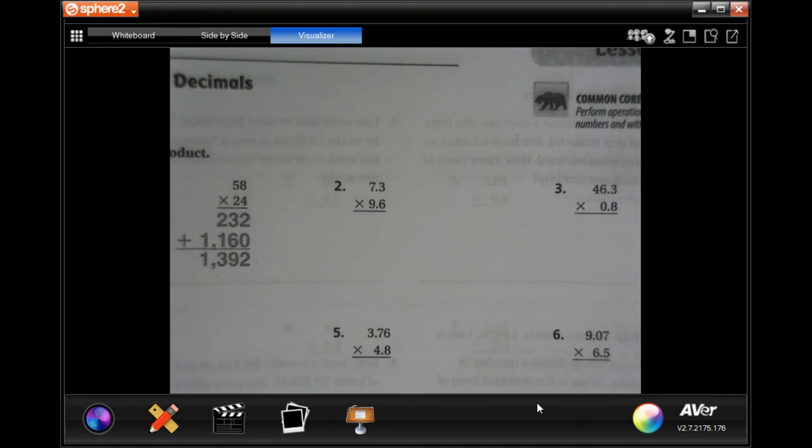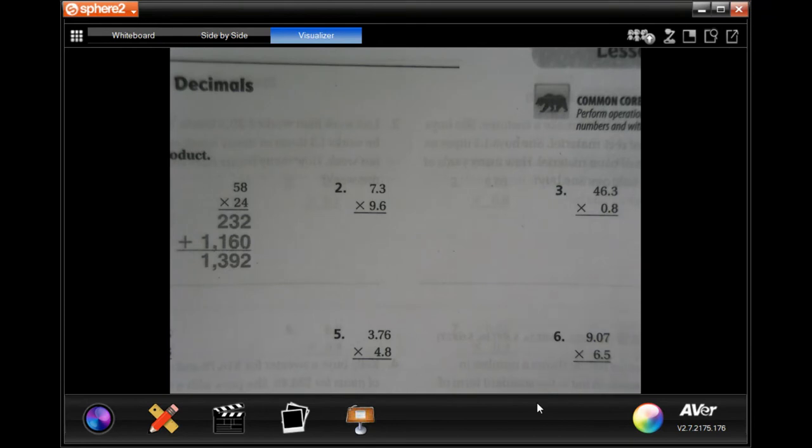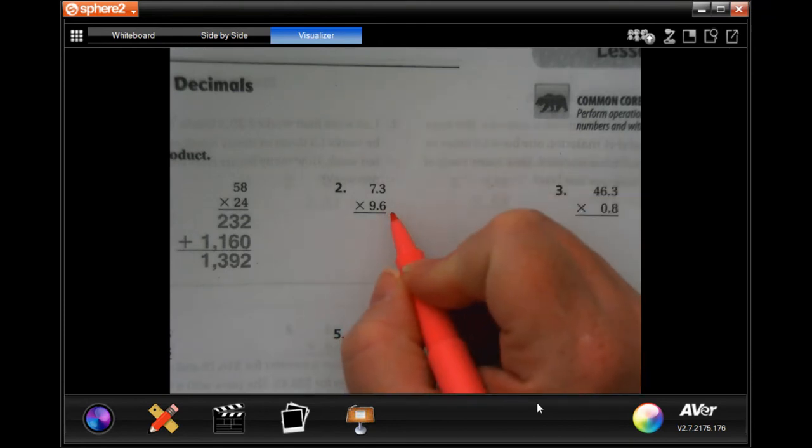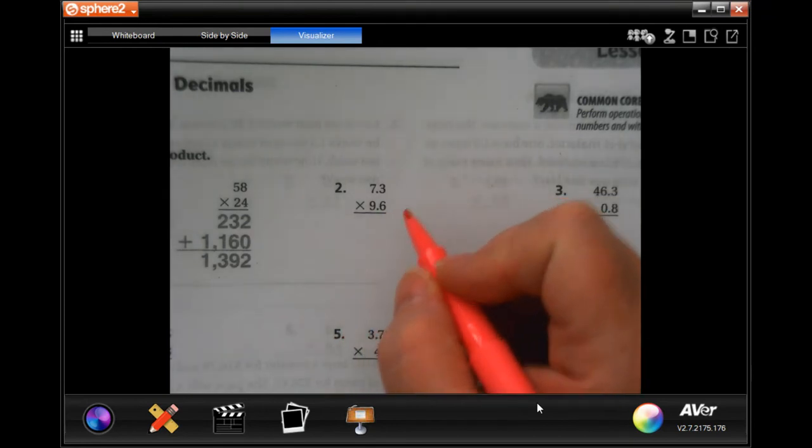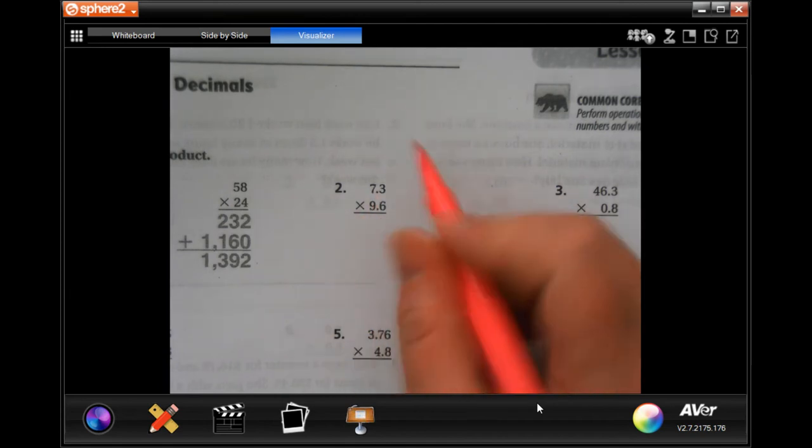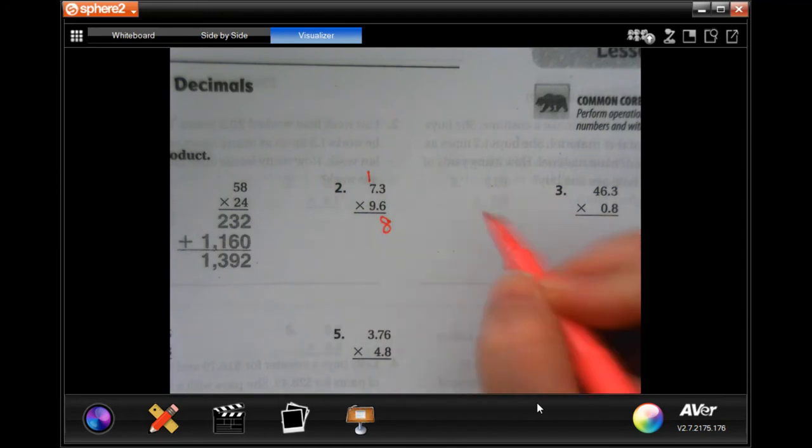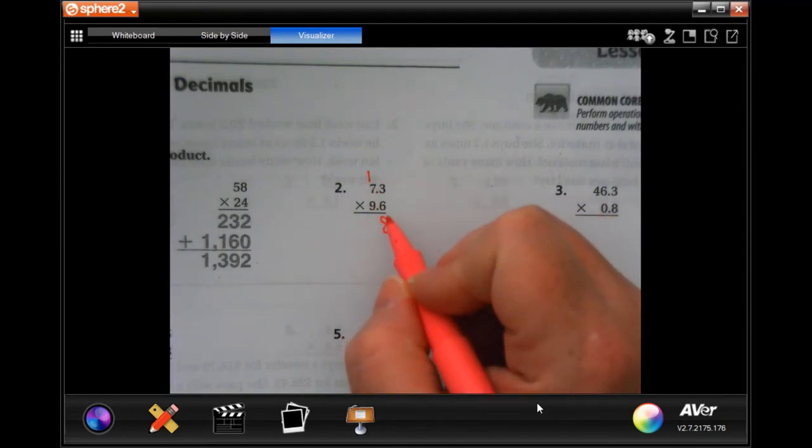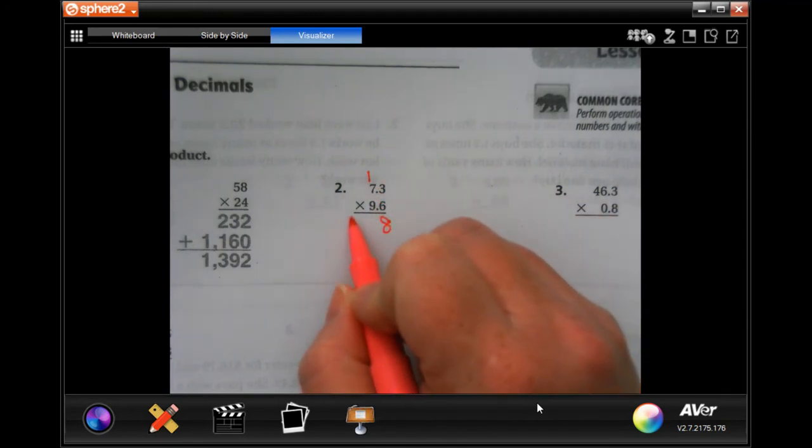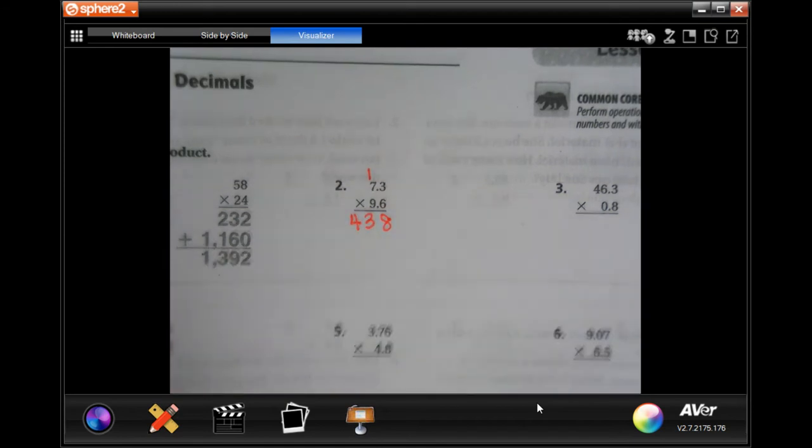Remembering to put our decimals in when we're done. We're just going to get started with regular multiplication. I've zoomed it in quite a bit so you can see what I'm doing. Six times three is eighteen, carry your one.